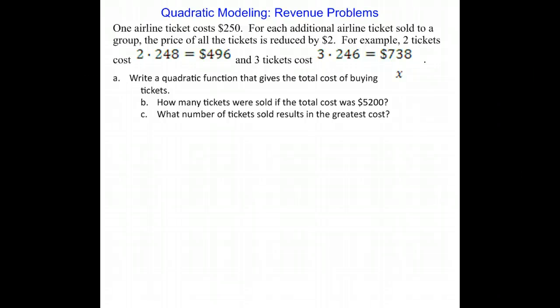two tickets cost 2 × $248 = $496, and three tickets cost 3 × $246 = $738. What we're going to do is